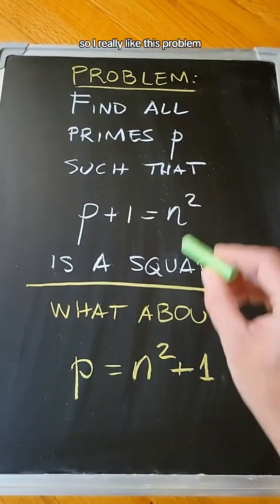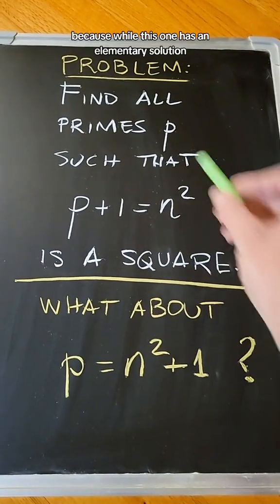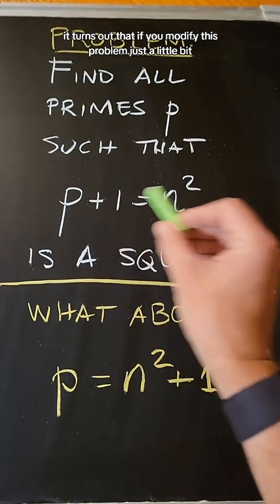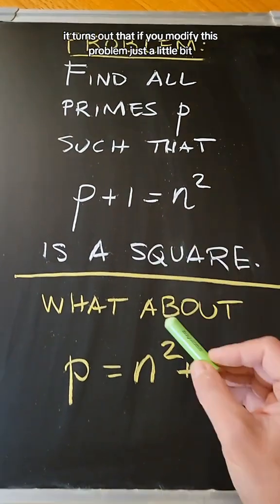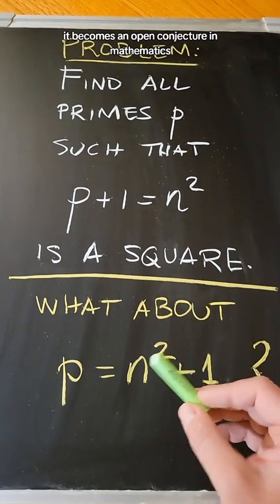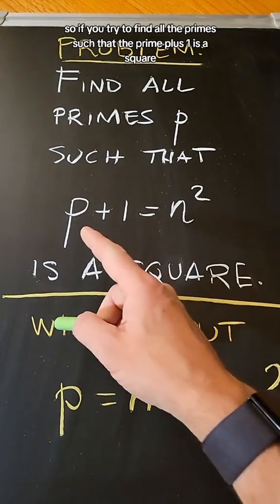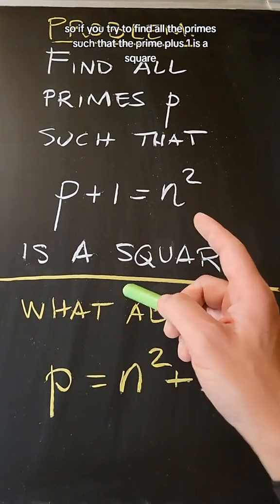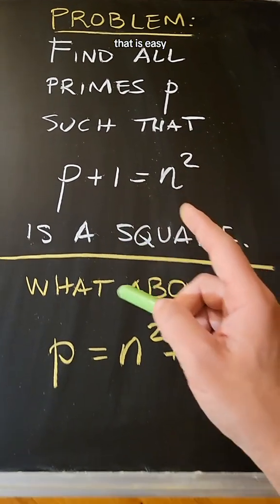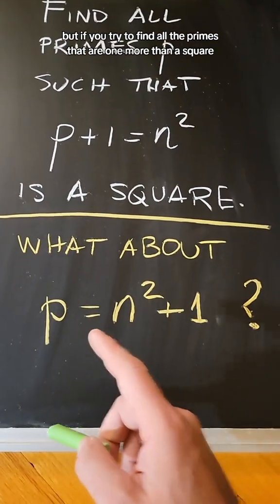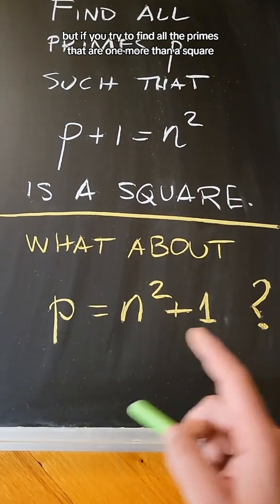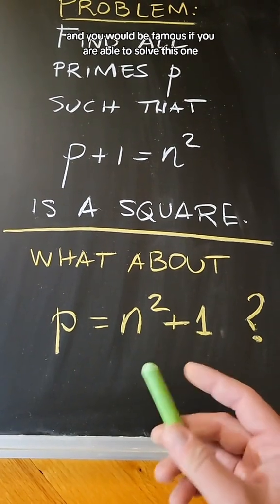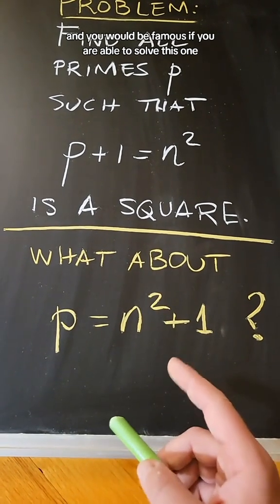I really like this problem because while this one has an elementary solution, it turns out that if you modify this problem just a little bit, it becomes an open conjecture in mathematics. Finding all primes such that the prime plus 1 is a square is easy, but finding all primes that are 1 more than a square all of a sudden becomes an open problem — and you would be famous if you were able to solve that one.